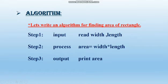Step 3: Output — print area. Whatever the formula, it will be solved and the result will come in area, and then in the last step, area will be printed. So the algorithm should be written in a form that includes input, process, and output.